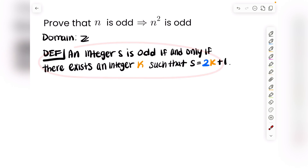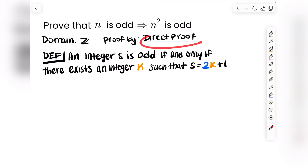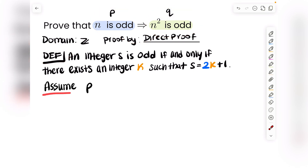Now that we have all the definitions we need, we're ready to start the proof. Because we see an implication, the first thing to try is a direct proof. A direct proof says that if p implies q, we assume p is true and use axioms, theorems, definitions, and properties to get to q. So we start by assuming p — and p is: n is odd.